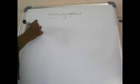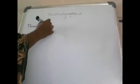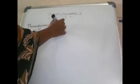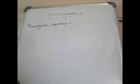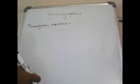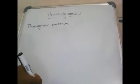Next is thermodynamic equilibrium. In mechanics, the state of a body is specified by means of a few measurable quantities such as the position of the center of mass, its velocity, acceleration, etc.